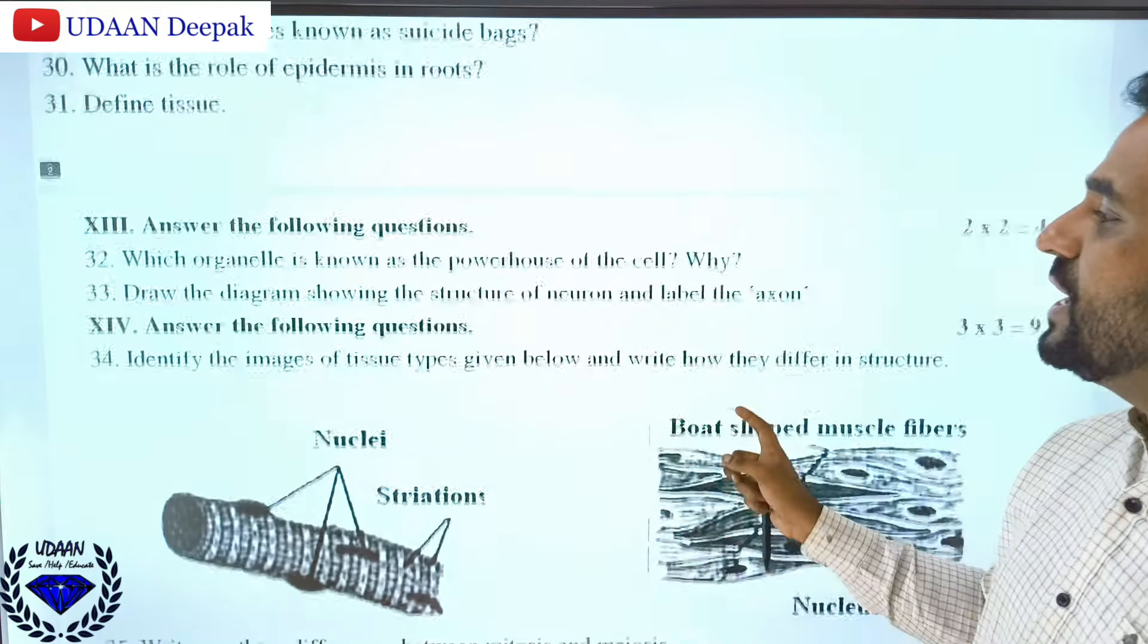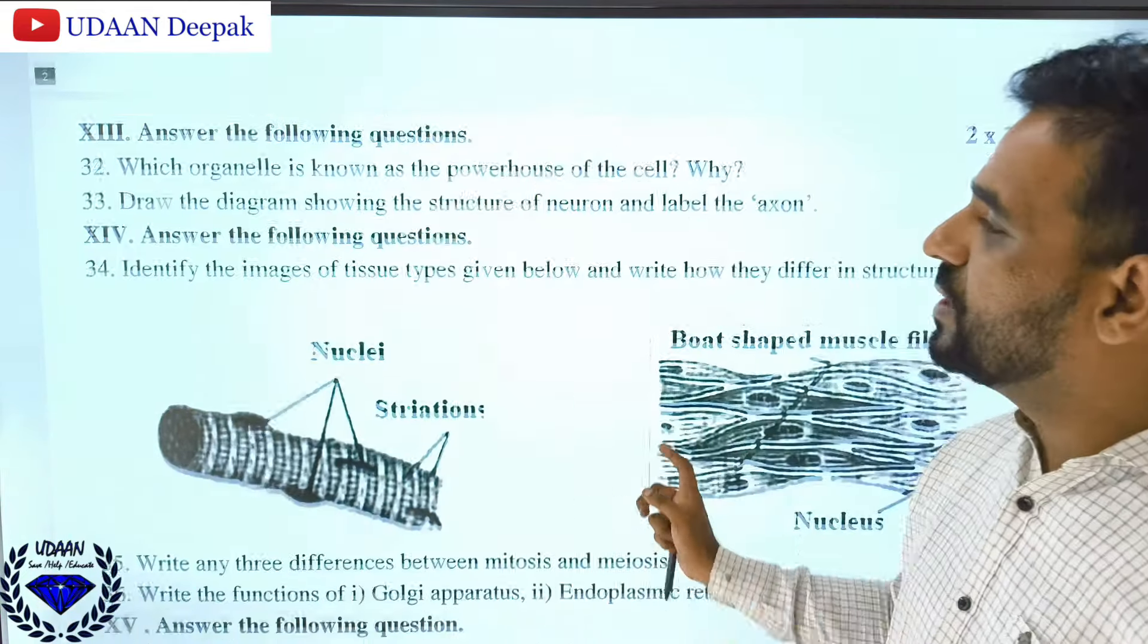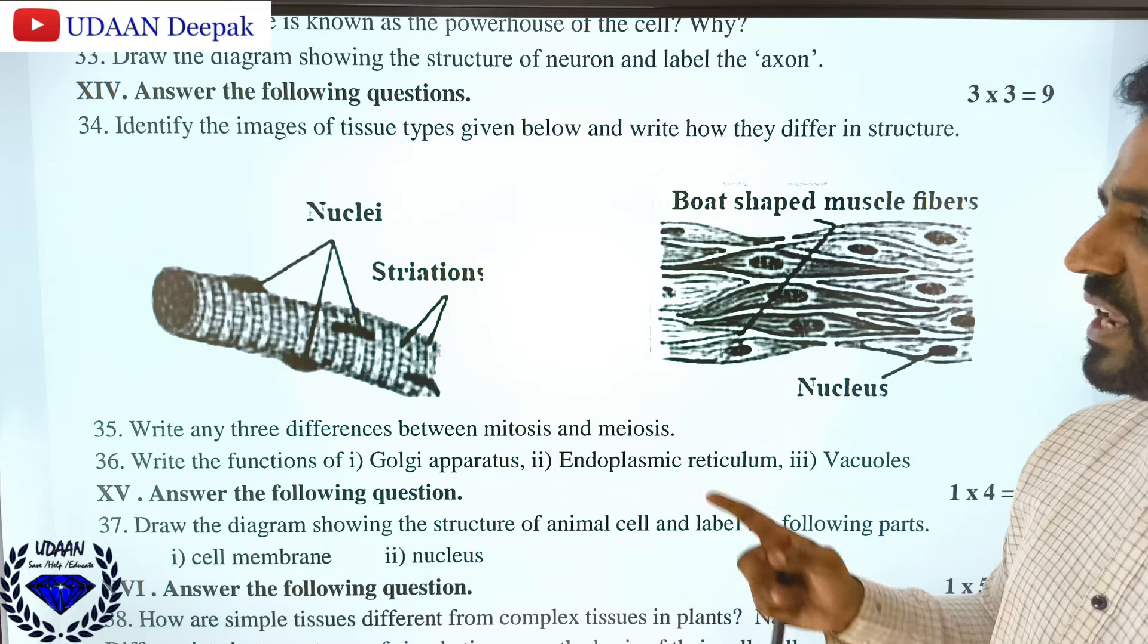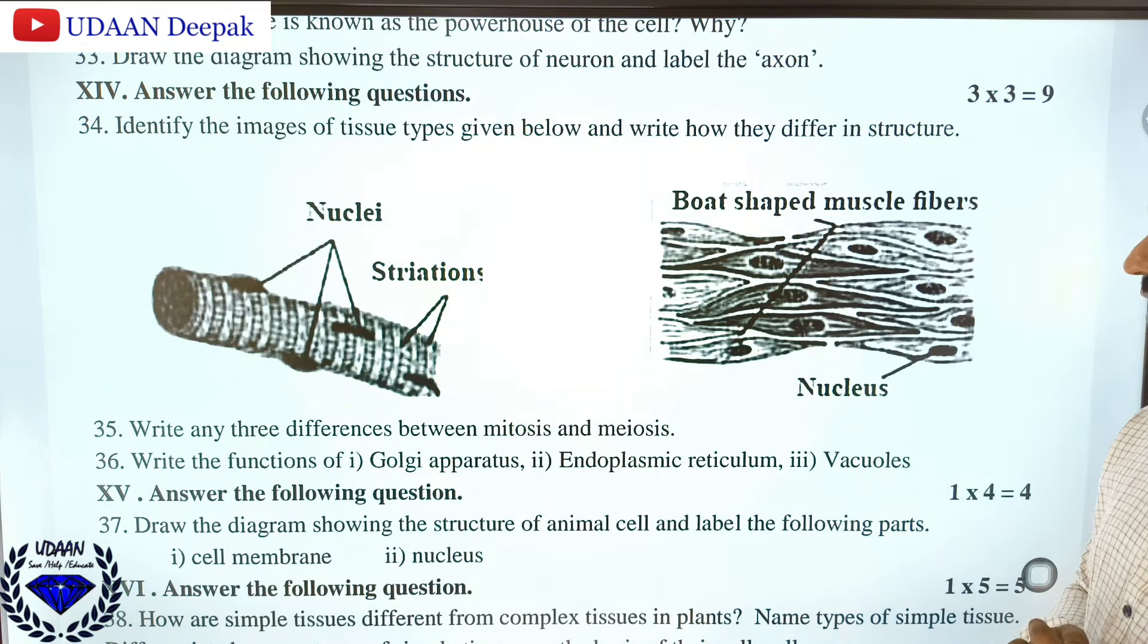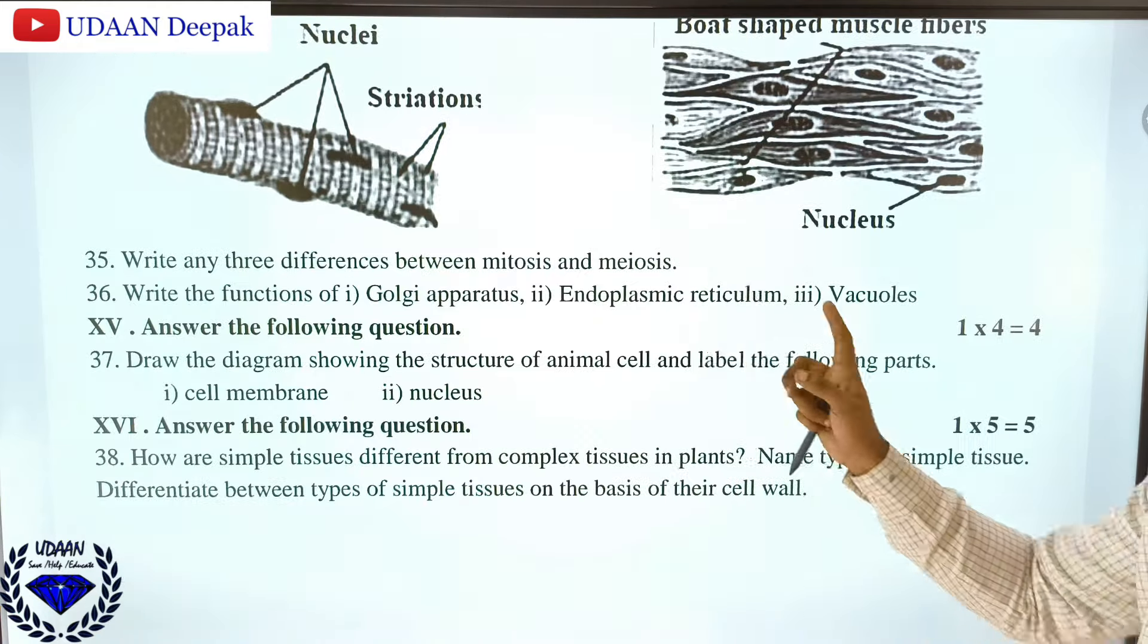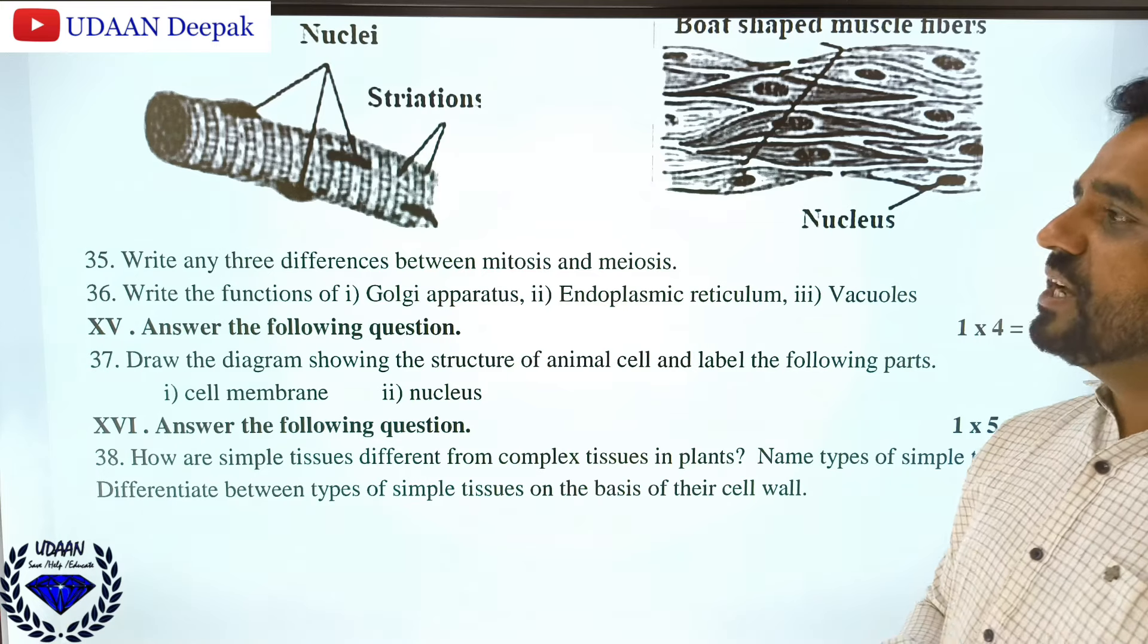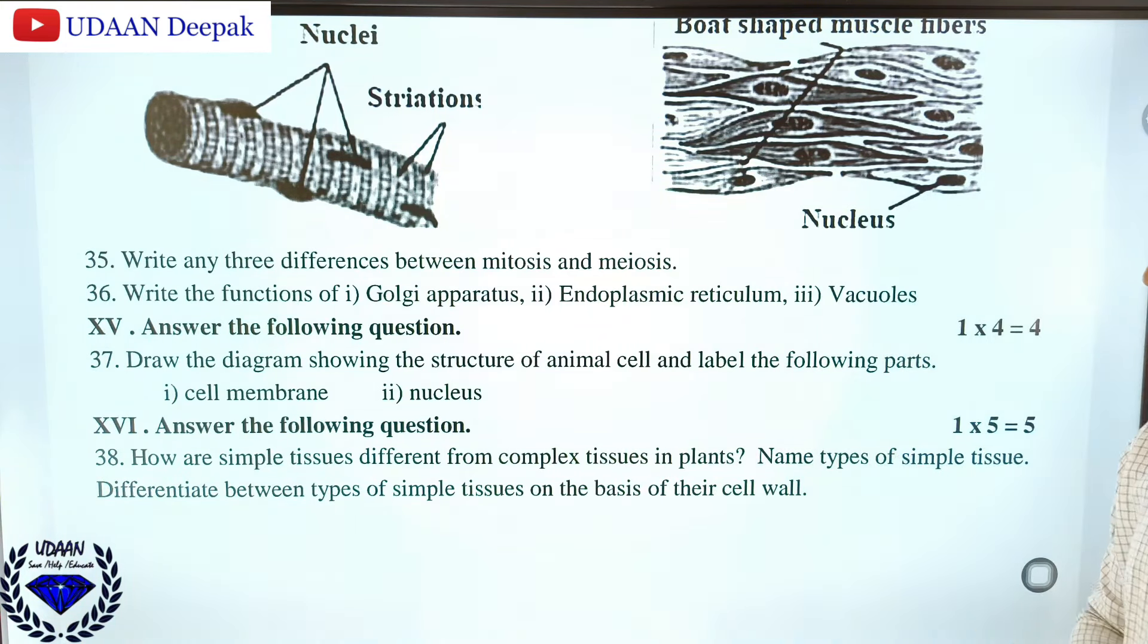Draw the structure of a neuron and label the axon - this is a very important diagram you should remember. Identify the images: you can see striated muscles, cardiac muscles, and smooth muscles. You should know and write the differences. Write three differences between mitosis and meiosis. Write the functions of Golgi apparatus, endoplasmic reticulum, and vacuoles.